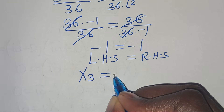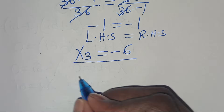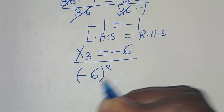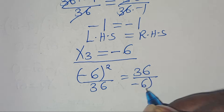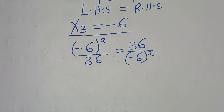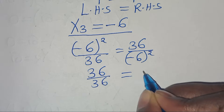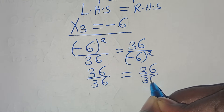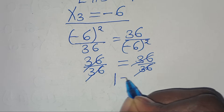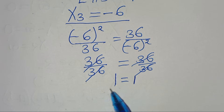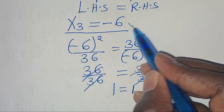Let's check x₃ which is equal to negative 6. We have negative 6 to the power of 2 divided by 36, equals 36 divided by negative 6 to the power of 2. Negative 6 squared is 36, so we get 36 divided by 36, equals 36 divided by 36. Simplifying, this is 1 equals 1. The left hand side equals the right hand side, affirming that x₃ equals negative 6 satisfies the equation.